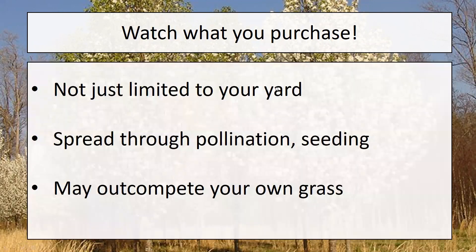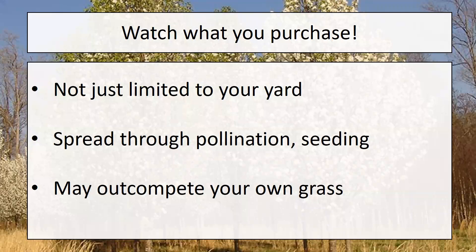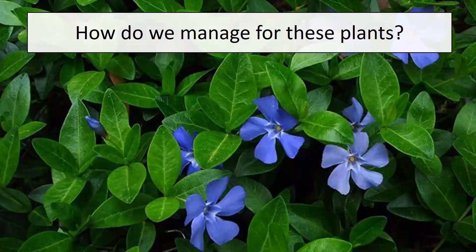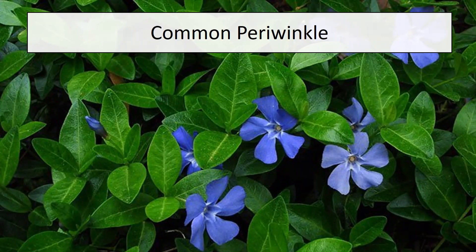Watch what you purchase. Remember that the plants you buy are not just limited to your yard — plants will pollinate and spread their seeds through human and animal activity, and through wind pollination. Some species may even out-compete your own grass. Vinca, or common periwinkle, is also an invasive that you can buy very easily. We need to consider managing for the land and not necessarily for the plant itself.